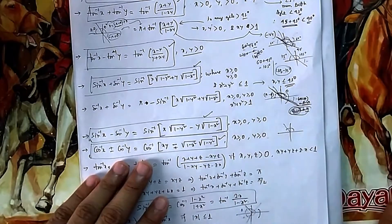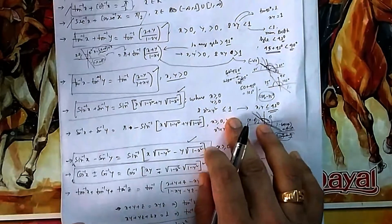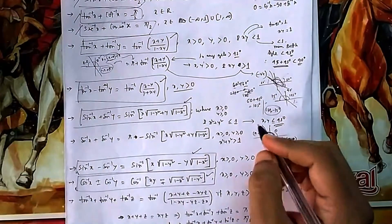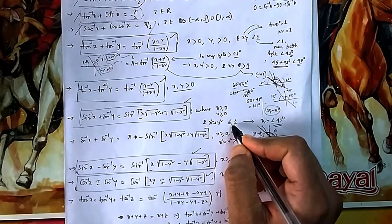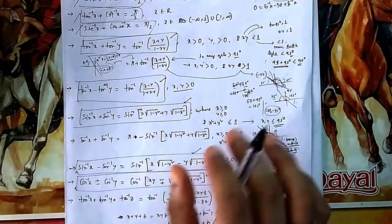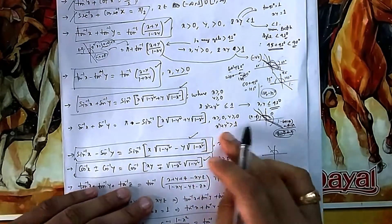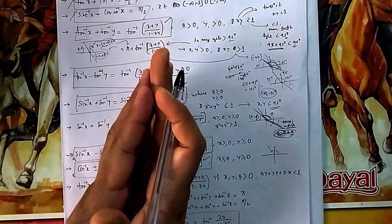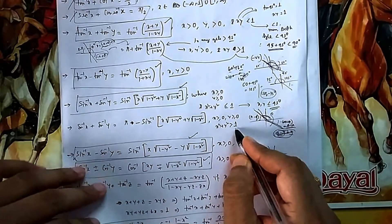Again, x > 0 and y > 0, but there is a catch: this formula applies when x² + y² ≤ 1. If sin(45°) = 1/√2, then when both angles are 45°, x² + y² = 1 exactly. If x² + y² > 1, it means at least one angle is greater than 45°, and their sum will exceed what the basic formula handles.